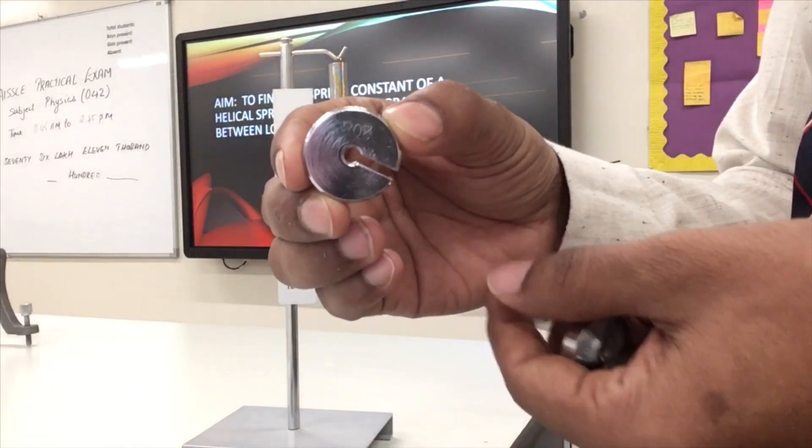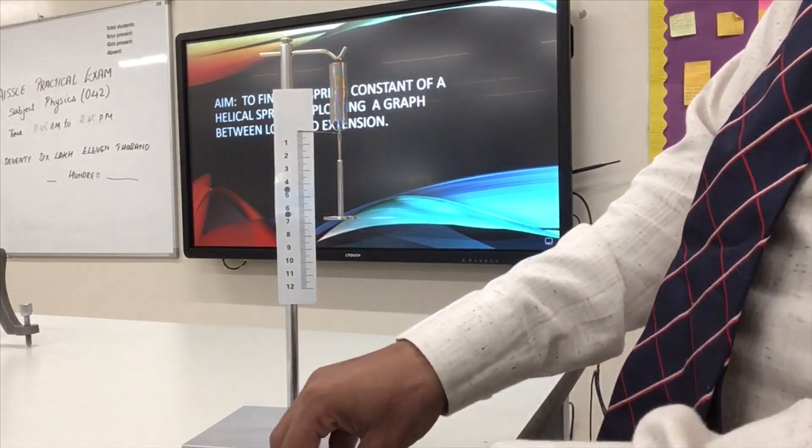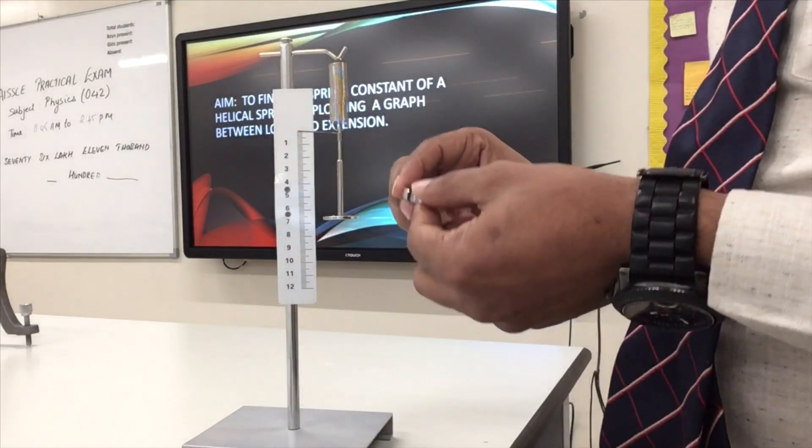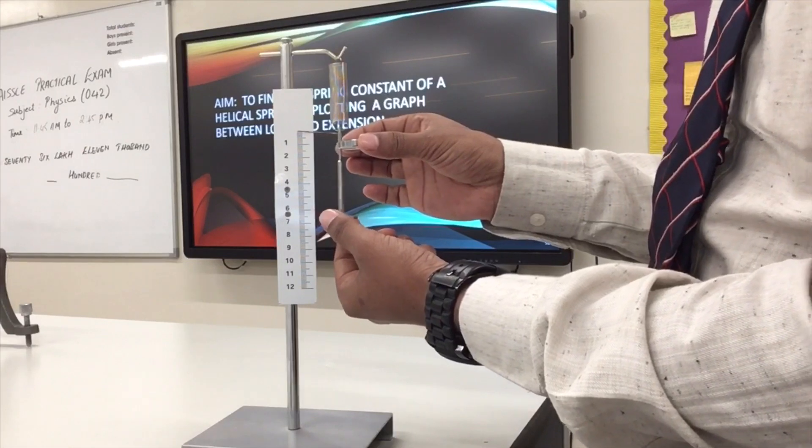The weight here is 20 grams. So I'll show you the table and the reading, how to keep the readings in the table. First I'll add 20 grams load to the spring and see the reading.